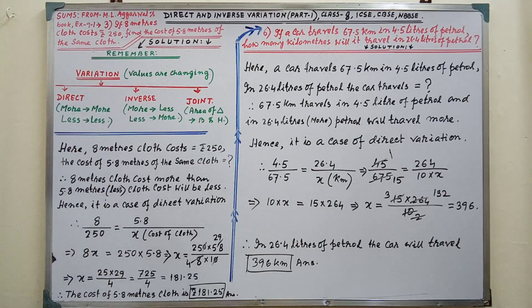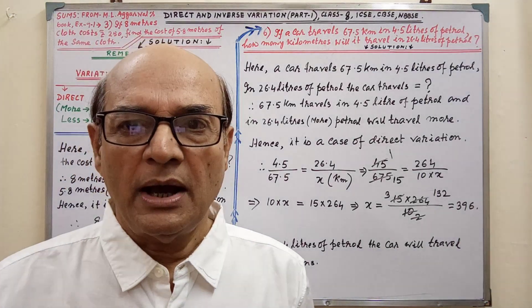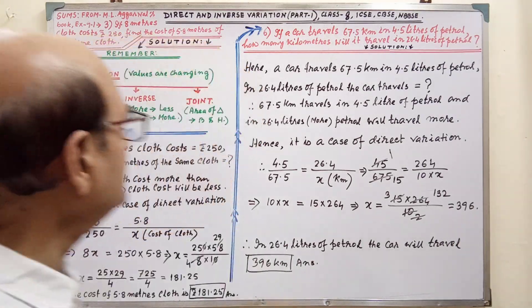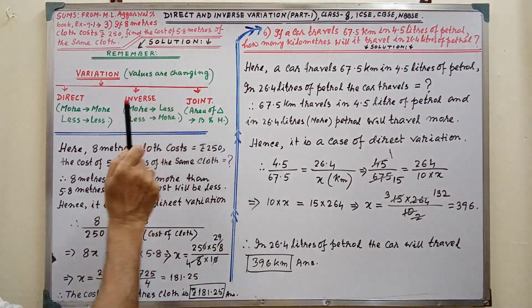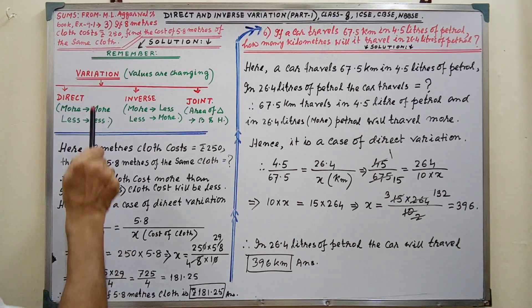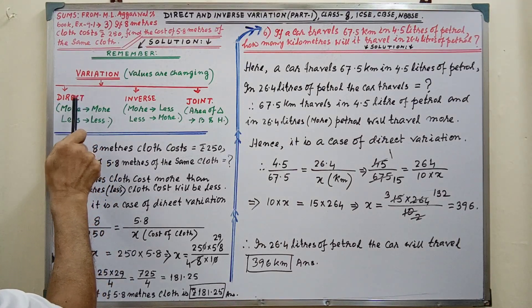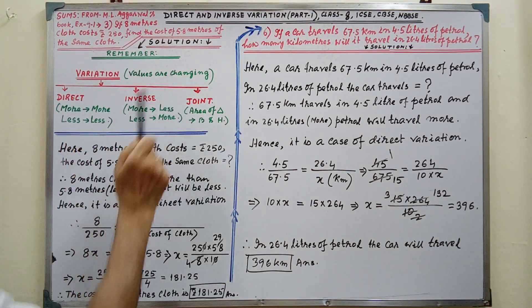Variation. What do you mean by variation? Values will vary, that is, values are changing. That is variation. There are three types of variation: Direct, Inverse and Joint.